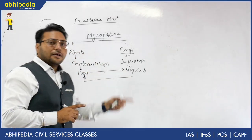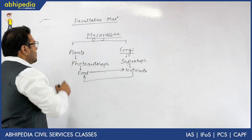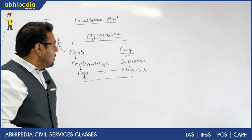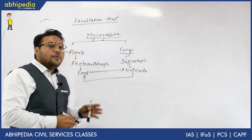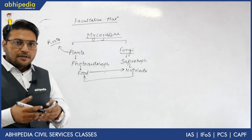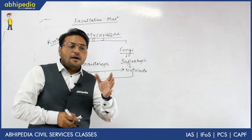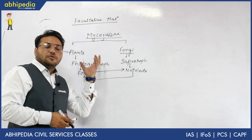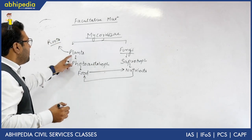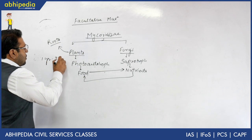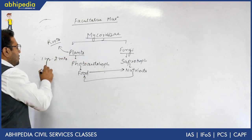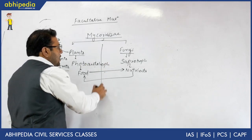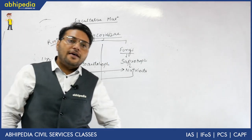There is one difference between lichen and mycorrhiza. In lichen, algae was rootless, whereas in mycorrhiza, plants have roots — meaning plants can also absorb nutrients from the soil on their own. In this relationship, fungi will further supply nutrients, which boosts the growth of plants. For example, if a plant grows 2 meters in one year, with the mycorrhiza relation it will grow 2.5 meters. If you separate them, the plant can survive and even the fungi can survive — that is why it is called facultative mutualism.